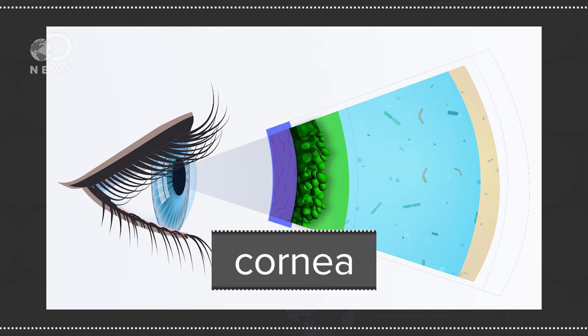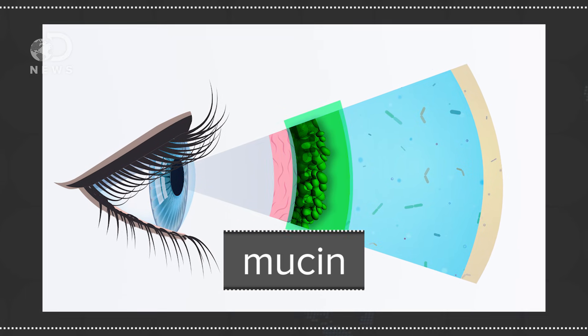So let's get technical for a second. The eyes of mammals are covered by a multilayer film that helps them do what they're supposed to do. Close to the cornea, the transparent front part of the eye, is a layer of mucin. Mucin is made up of protein that scientists think helps clear debris and pathogens from the eye.